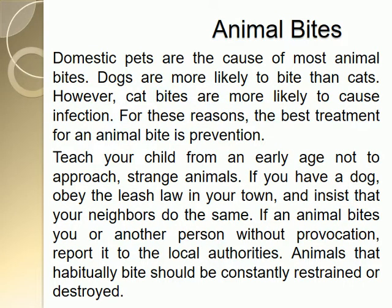Animal bites. Domestic pets are the cause of most animal bites. Dogs are more likely to bite than cats. However, cat bites are more likely to cause infections. For these reasons, the best treatment for animal bites is prevention. Teach your child from an early age not to approach strange animals. If you have a dog, obey the leash law in your town and insist that your neighbors do the same. If an animal bites you or another person without provocation, report to the local authorities. Animals that habitually bite should be constantly restrained or destroyed.